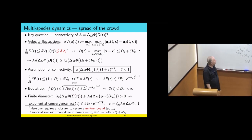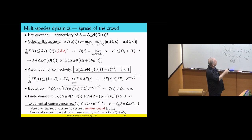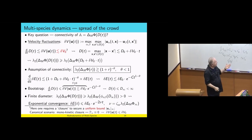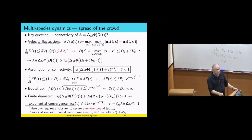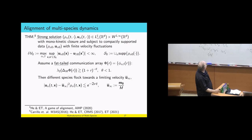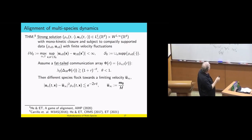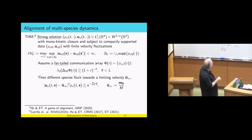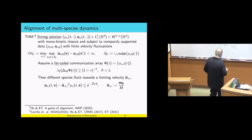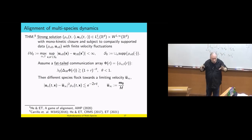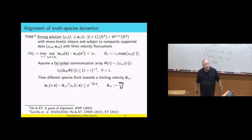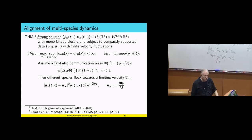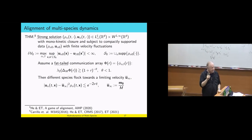This is the theorem. We assume strong solutions for the multikinetic with monokinetic closure — basically p equal to zero — and the velocity fluctuations are bounded. Then the different species flock towards a limiting velocity, which is basically the average of all different species, even though they do not all communicate with each other directly. This starts to be interesting.